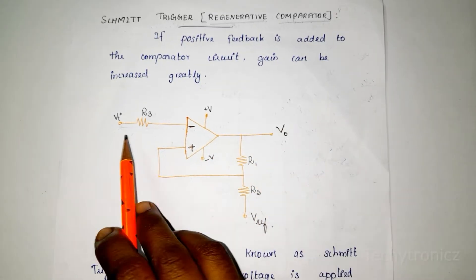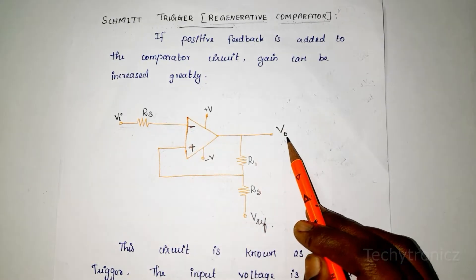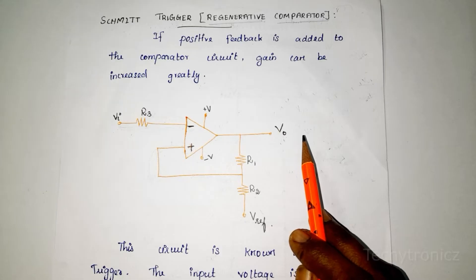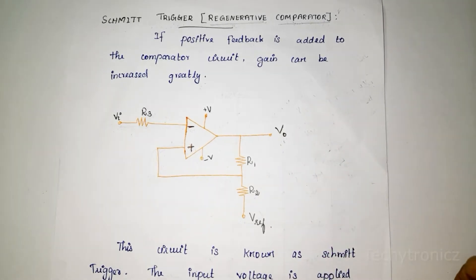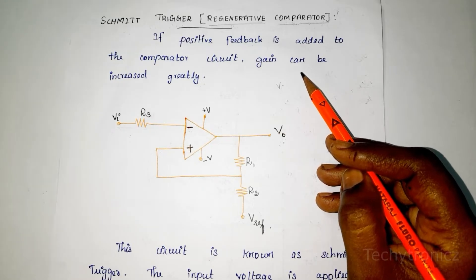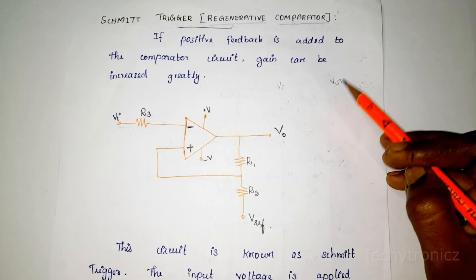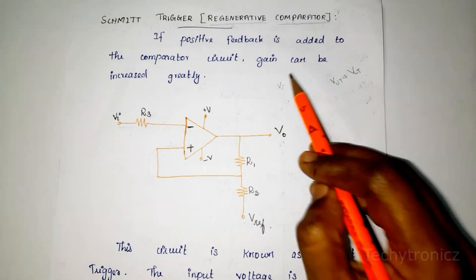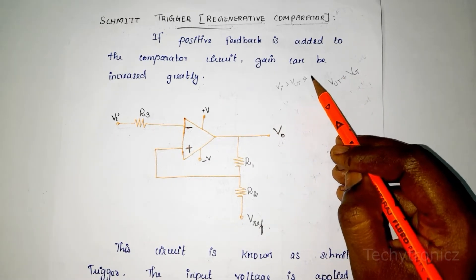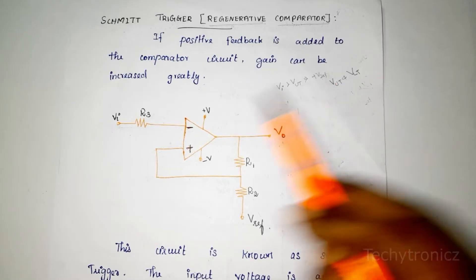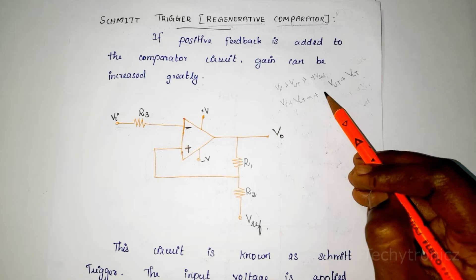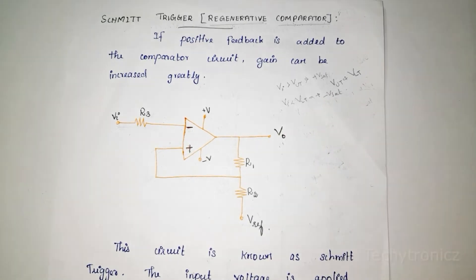The input voltage triggers the output voltage V0 every time it exceeds a certain voltage level. That voltage level is called upper threshold voltage and lower threshold voltage. When the input voltage is greater than upper threshold voltage, the output voltage will be plus V saturation, that means plus Vcc. When VI is less than lower threshold voltage, the output voltage is minus V saturation or VEE.